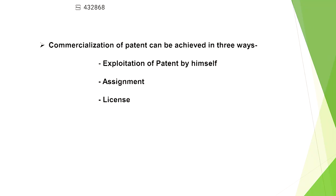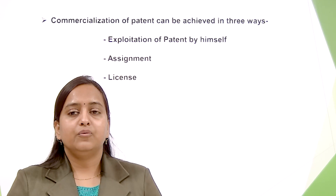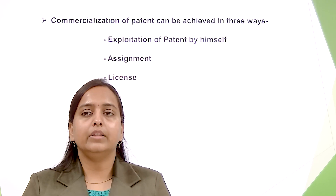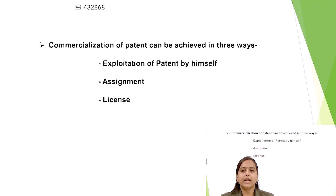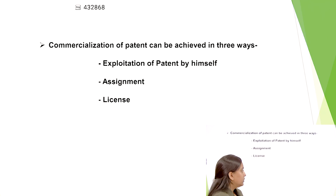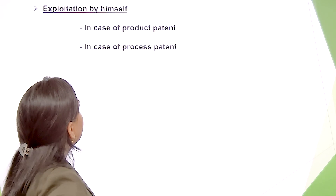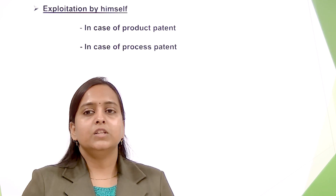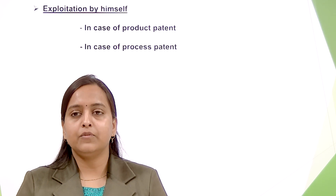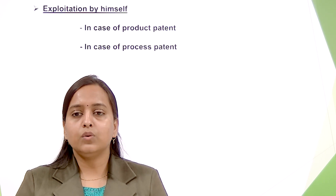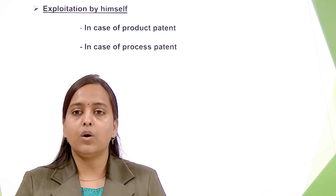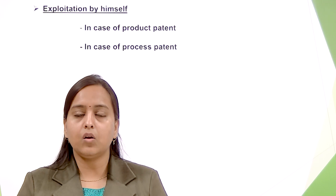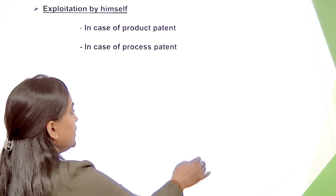Commercialization of a patent can be achieved in three different ways. The first way is that he may exploit the invention himself. The second way is that he may make an assignment of his right. The third way is that he may grant a license. In the case of a process patent, the patentee has the exclusive right to prevent third persons from using that process, and also from using, offering for sale, selling, or importing the product directly obtained from that process.